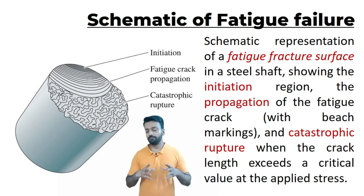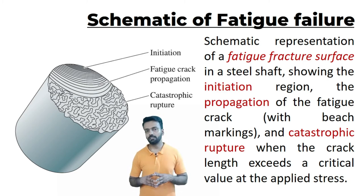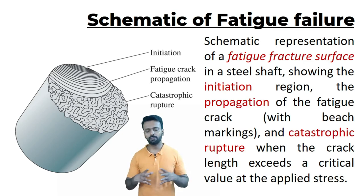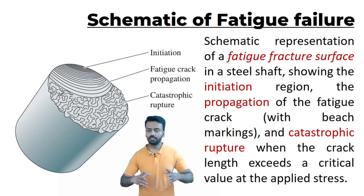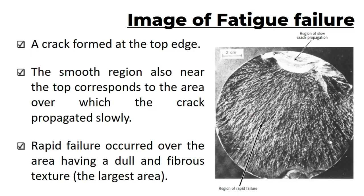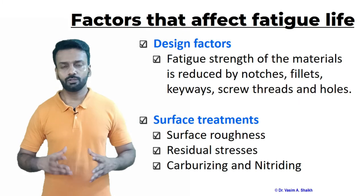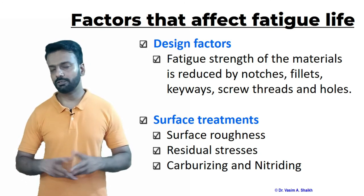Looking at this schematic of a fatigue fracture on a shaft, we can easily locate the crack initiation, then crack propagation shown by striations, and then the catastrophic final failure. In the actual image of fatigue failure, we can again locate the crack initiation, the beach marks, and then a large area representing the catastrophic final rupture.